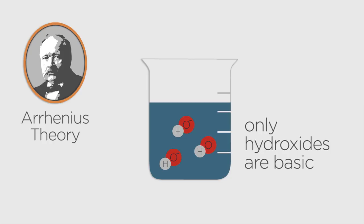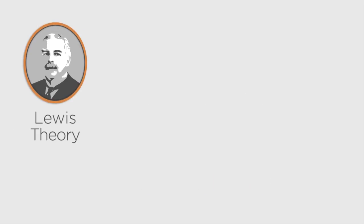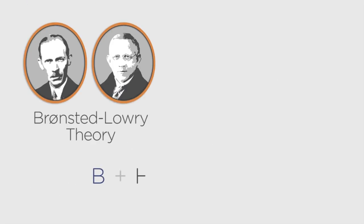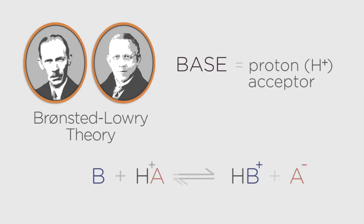We can see that bases react with acids to produce water and salt. In Lewis theory, a base is an electron pair donor. The Lewis definition is a very broad definition in which a wide range of chemical behavior may be described as basic behavior. In Brønsted-Lowry theory, a base is a proton or H+ ion acceptor.